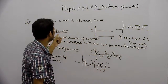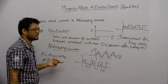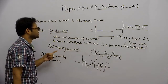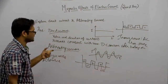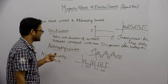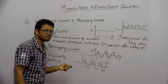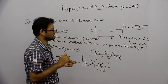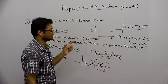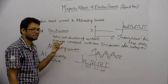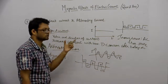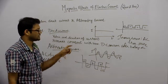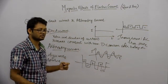तो यह था हमारा direct current और alternating current। Alternating current इसलिए ज्यादा use हो रहा है क्योंकि alternating current को हम long distance पे भेज सकते हैं without any great loss of energy। लेकिन direct current में ऐसा नहीं होता। इसलिए alternating current का यह advantage है कि हम उसे बहुत दूर तक भेज सकते हैं बिना ज्यादा energy loss के — इसीलिए हमारे घरों में AC current use होता है।